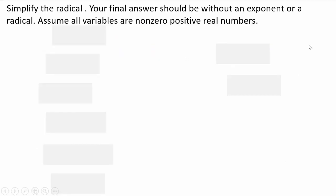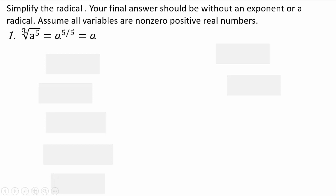Now that you understand the notation, let's do some examples — simplify using the definition of radical and fractional exponent. Fifth root of a to the 5th power: that's a to the 5 raised to the one fifth power. When you raise something to a power, you multiply the exponents. When the index matches the exponent, you get a to the power 5 over 5 = a to the power 1, which is just a.